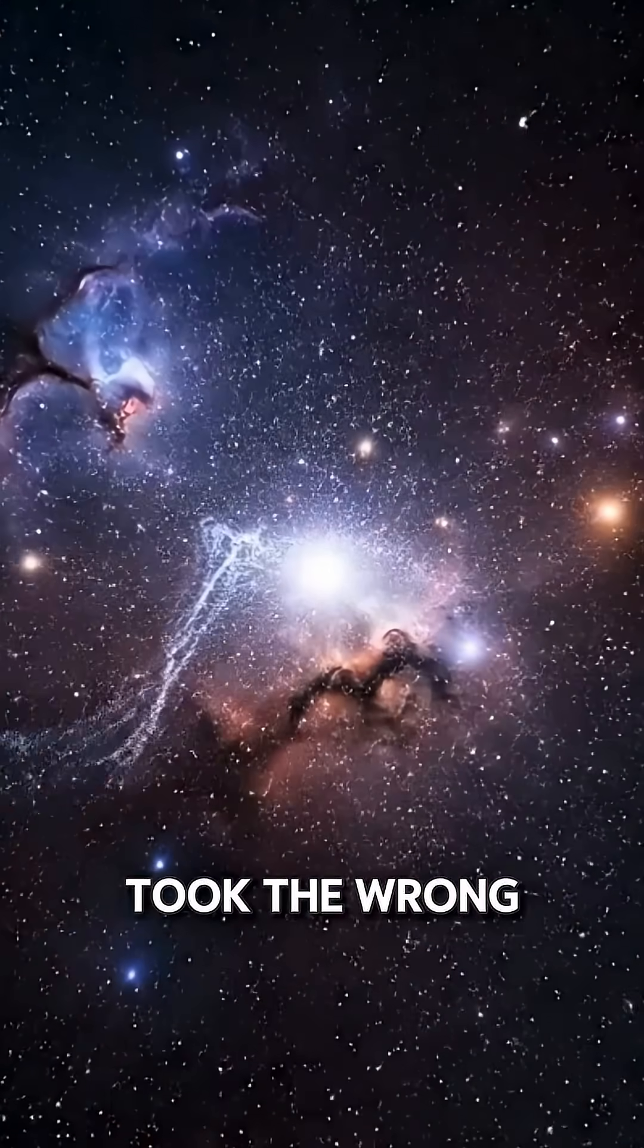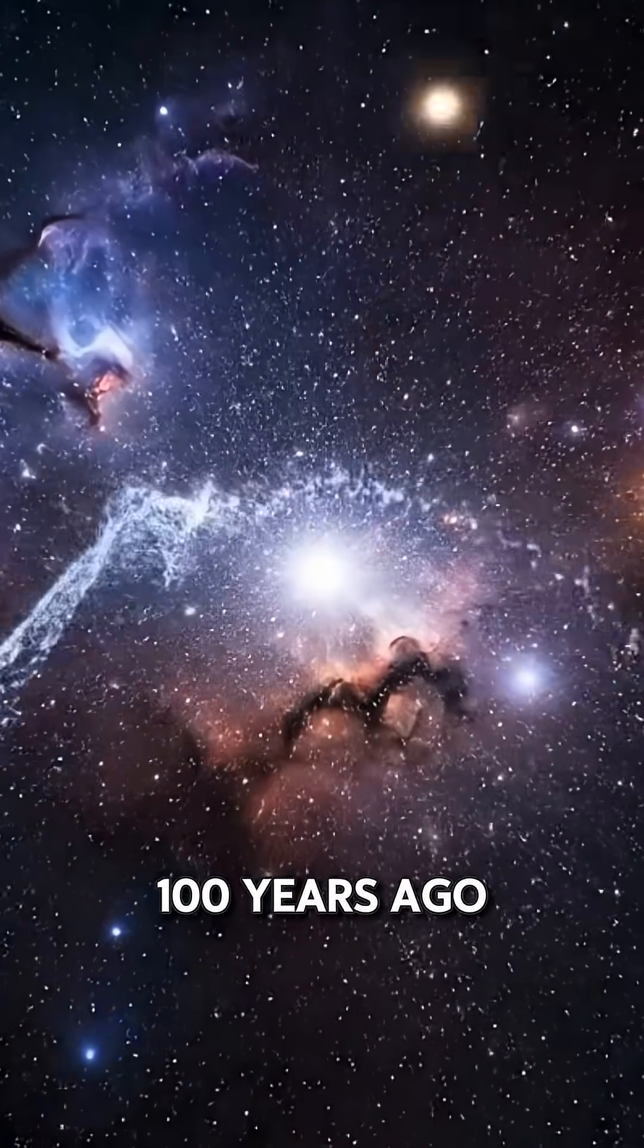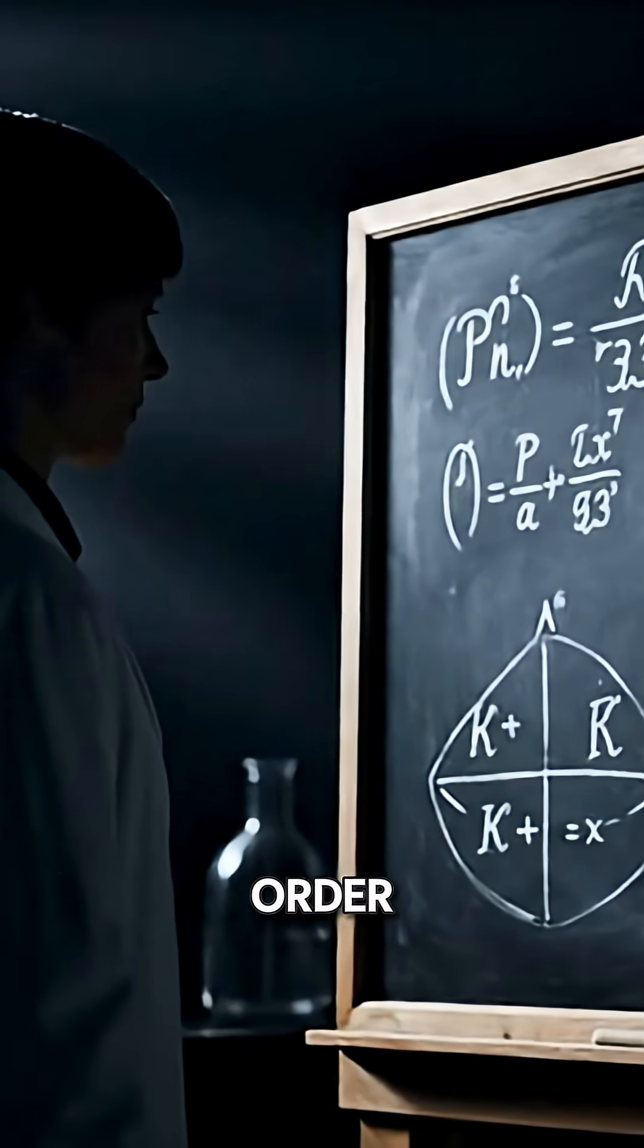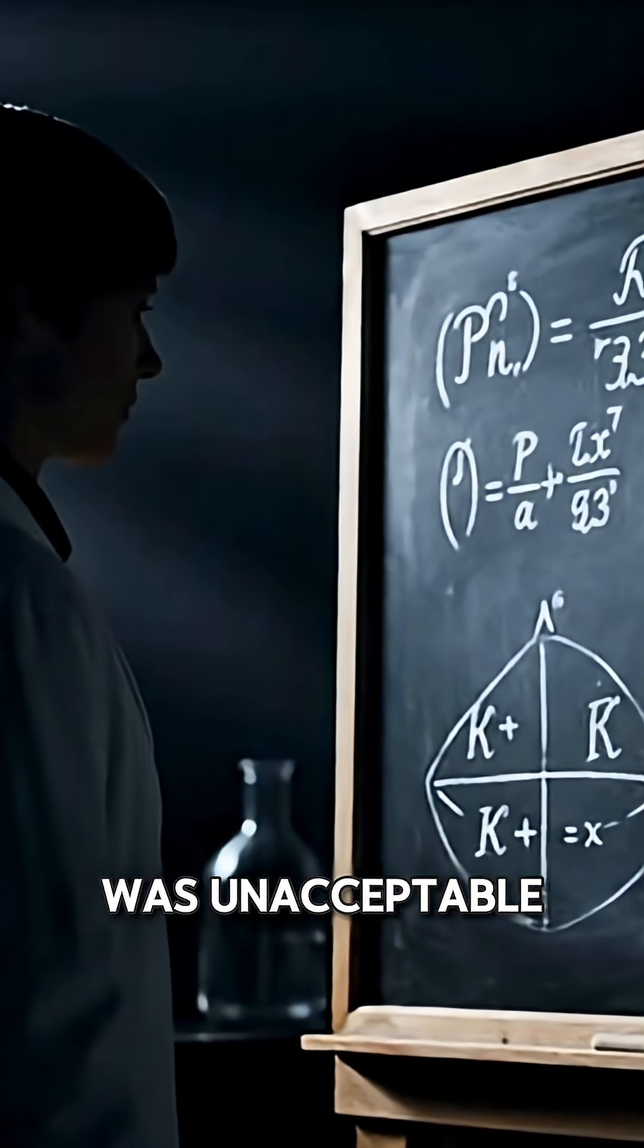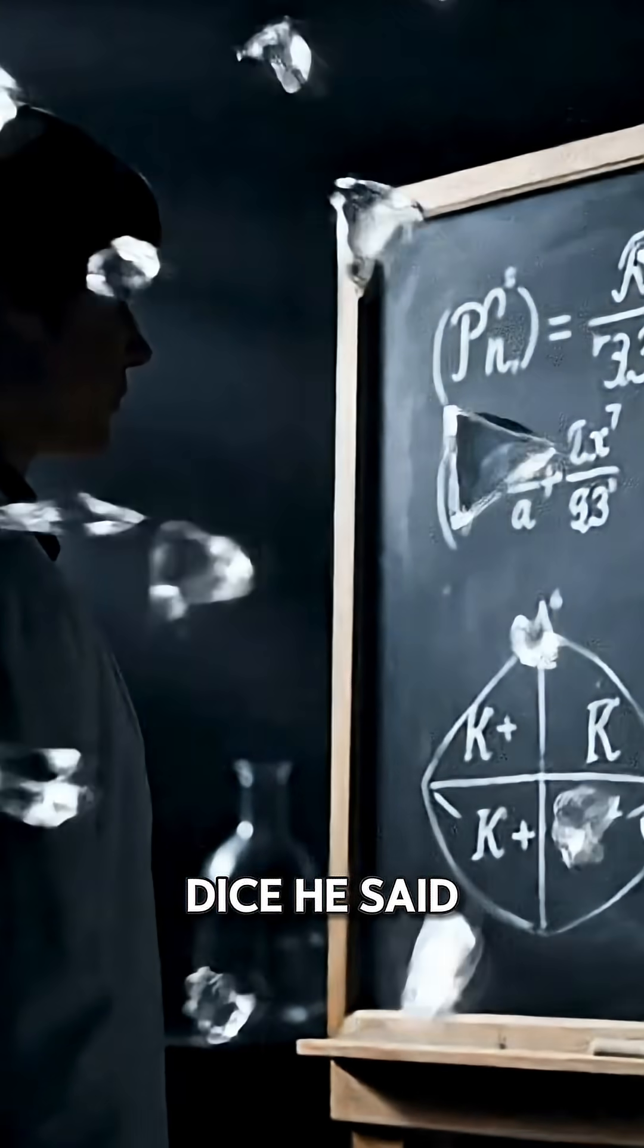What if physics took the wrong turn a hundred years ago? Einstein believed in order. To him, randomness was unacceptable. God doesn't play dice, he said.